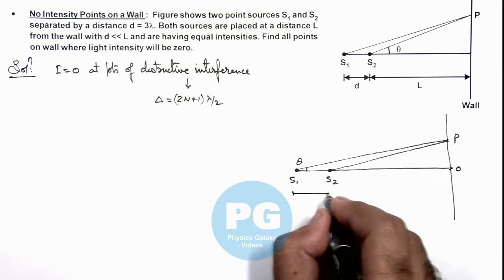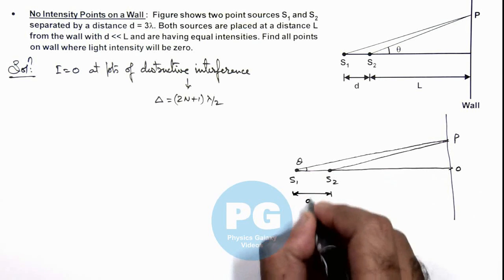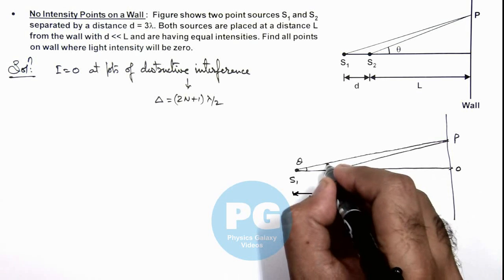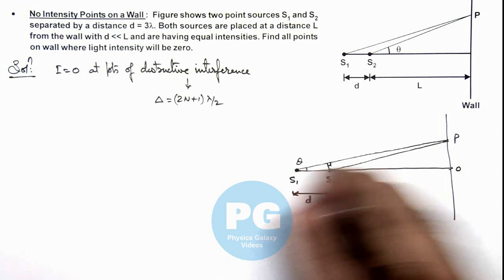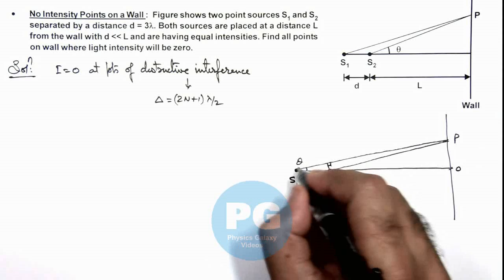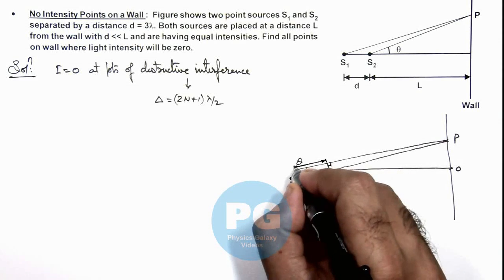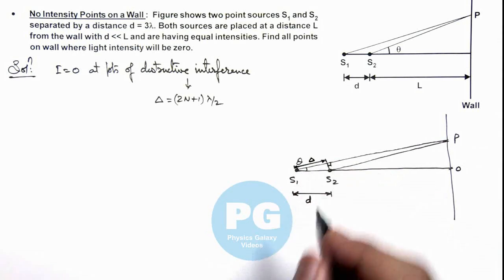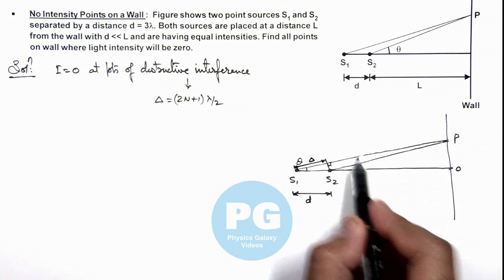If d is the separation between the sources, then if we drop a perpendicular from S₂ to line S₁P, then this would be the path difference between the two waves approaching point P.